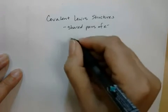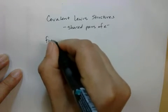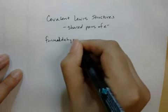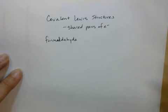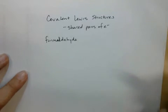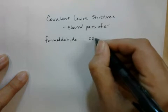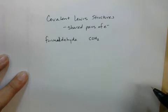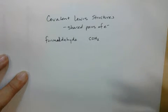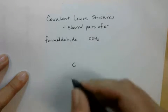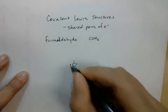I'm going to do this formula here for a molecule called formaldehyde. It's the stuff they used to use to preserve specimens for dissection. Formaldehyde has a pretty simple formula: COH₂. We put our least electronegative element in the center, and that has to be carbon. It can't be hydrogen, because hydrogen only has one valence electron. So I'm going to put the C in the center and draw its four valence electrons.